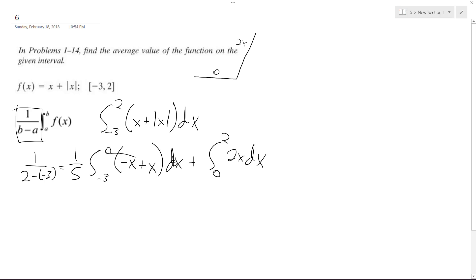So this pretty much cancels itself out, and we're left with just 1 fifth, and we're integrating this, and this just becomes x squared over 2, but it cancels out the 2 coefficient, so it's just x squared, and it's from 0 to 2.